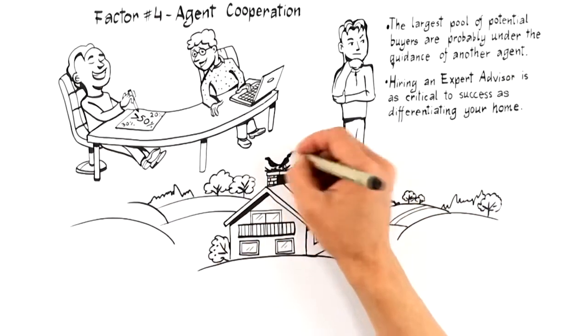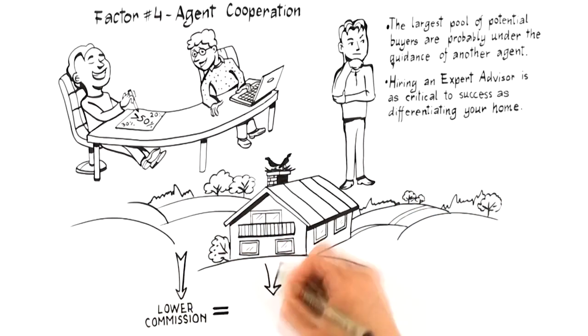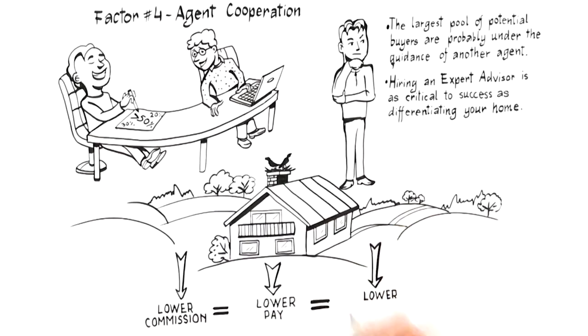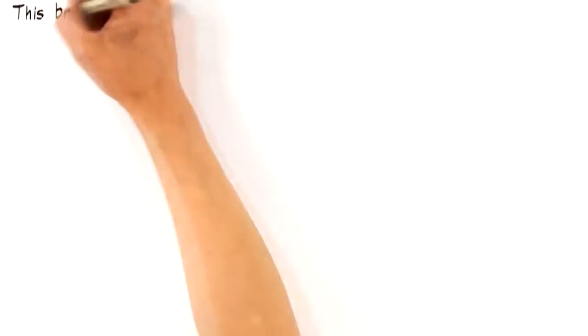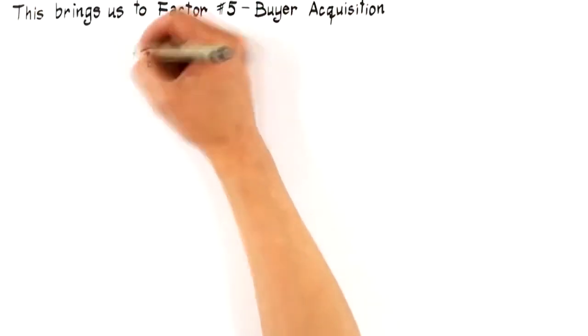Be wary of the agent that offers to accept lower commission. Often this leads to a lower compensation being offered to the agents that potentially have a buyer for your home, resulting in little to no activity on your house. This brings us to factor number five, buyer acquisition.